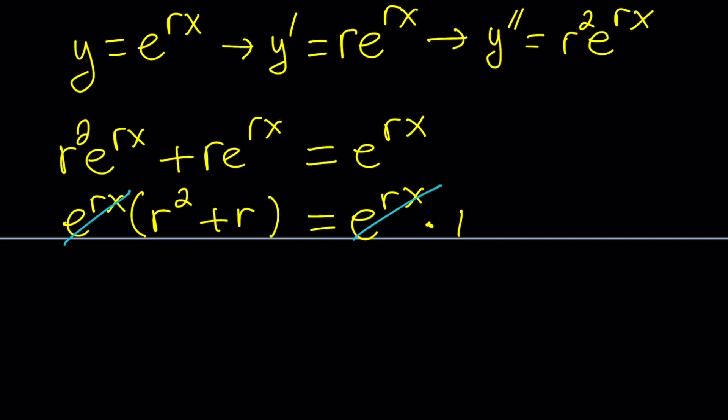Now let's go ahead and simplify this a little bit. First of all, I can go ahead and cancel out e to the rx, which means division by e to the rx. But can it be zero? No. e to the rx cannot be zero, even for complex values of x.